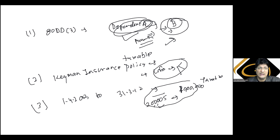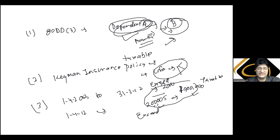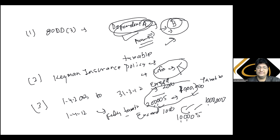Agar yeh policy 1st April 2012 ke onwards li gayi hai, to yeh percentage reduce karke 10% kar diya gaya — yaani 10 lakhs sum assured pe 1 lakh se zyada premium hone par maturity amount fully taxable hoga. Ek aur baat — specified disability ke liye insurance karaaya jaata hai to 2012 wala 10% threshold 15% kiya gaya hai, yeh bhi dhyan rakhiyega.